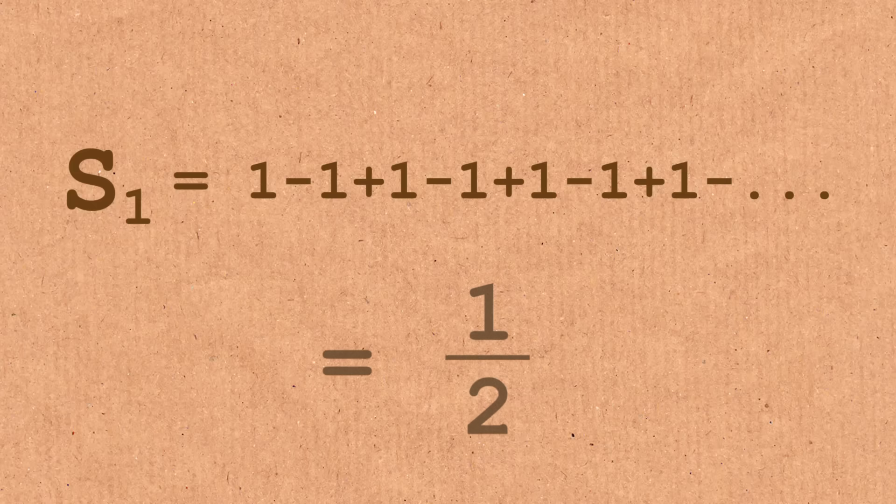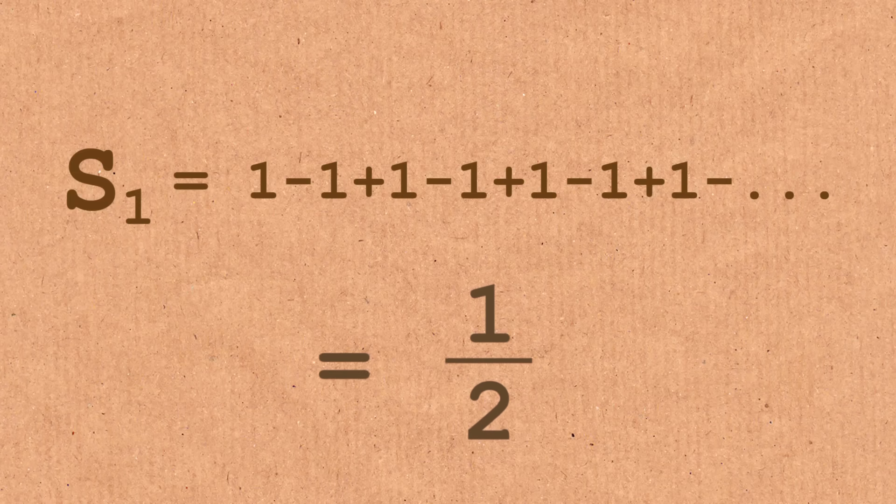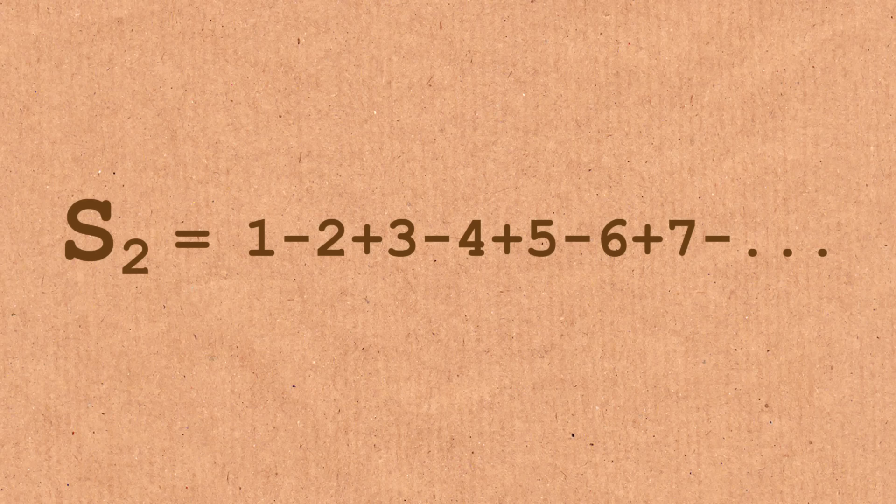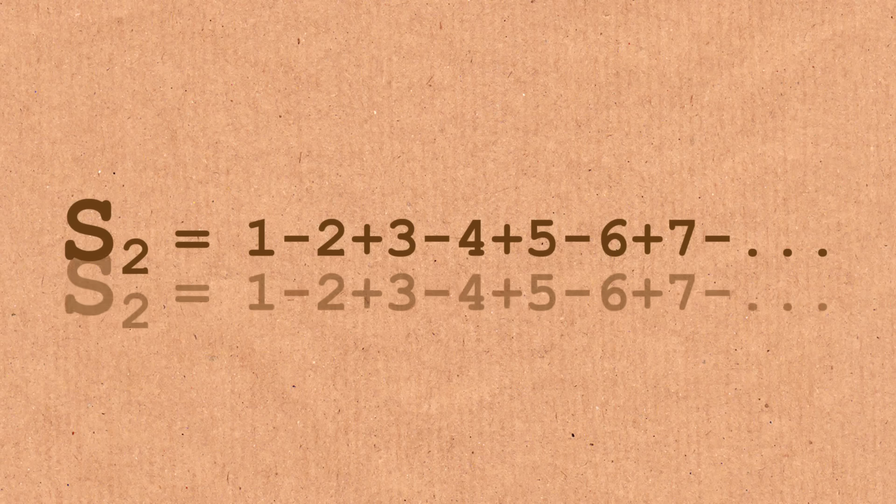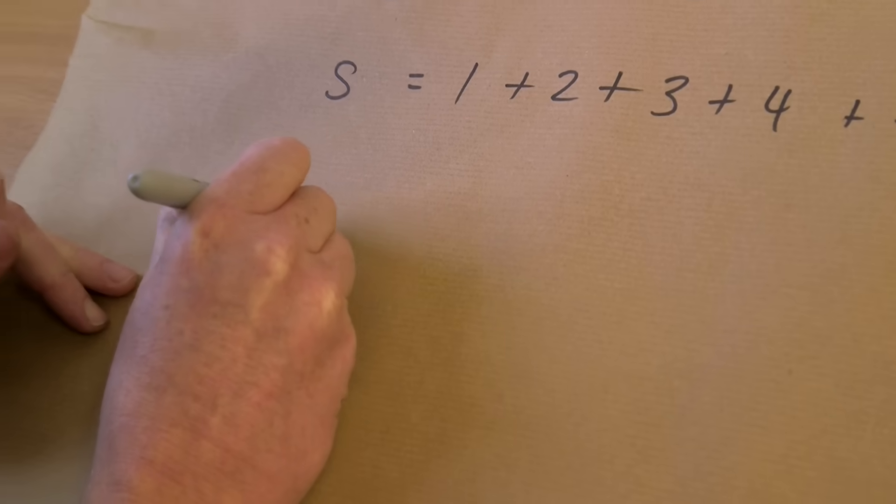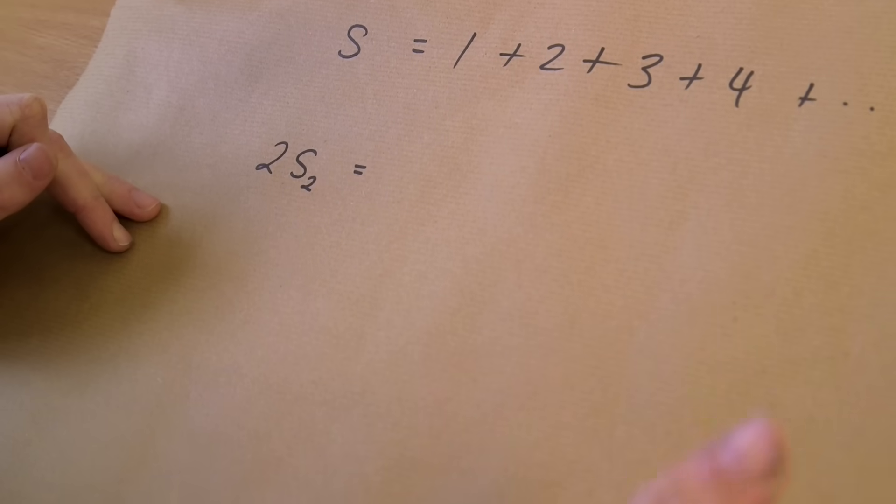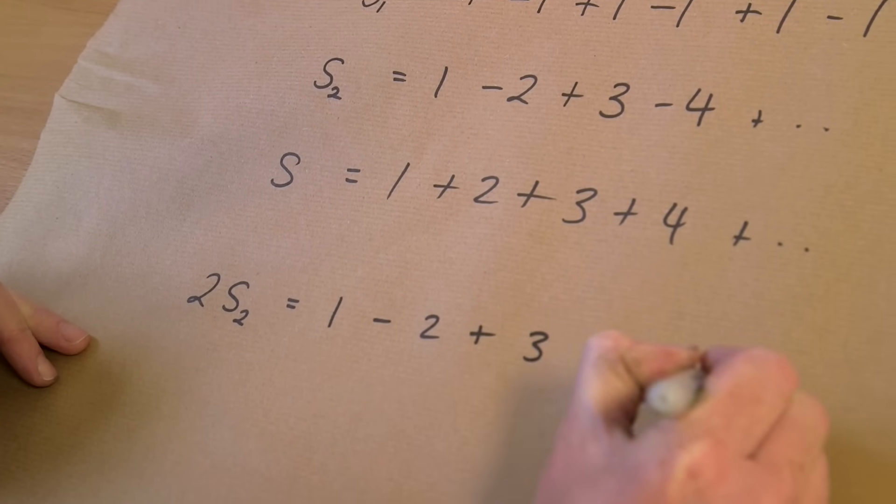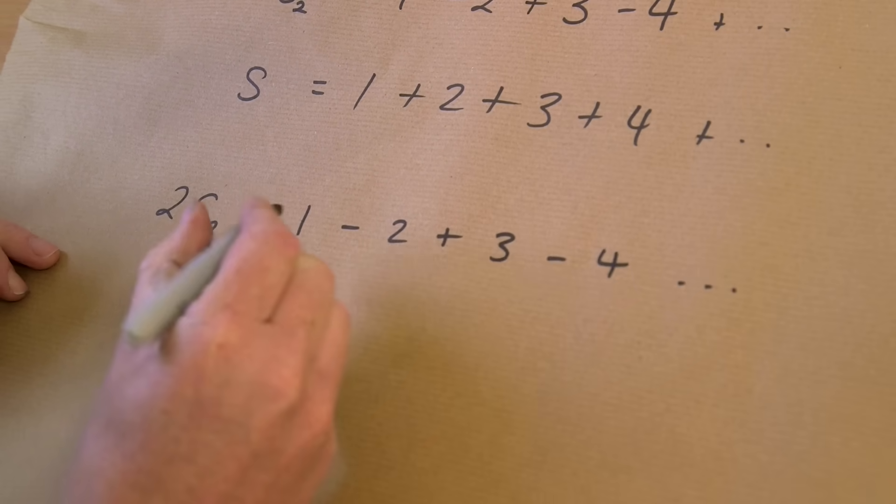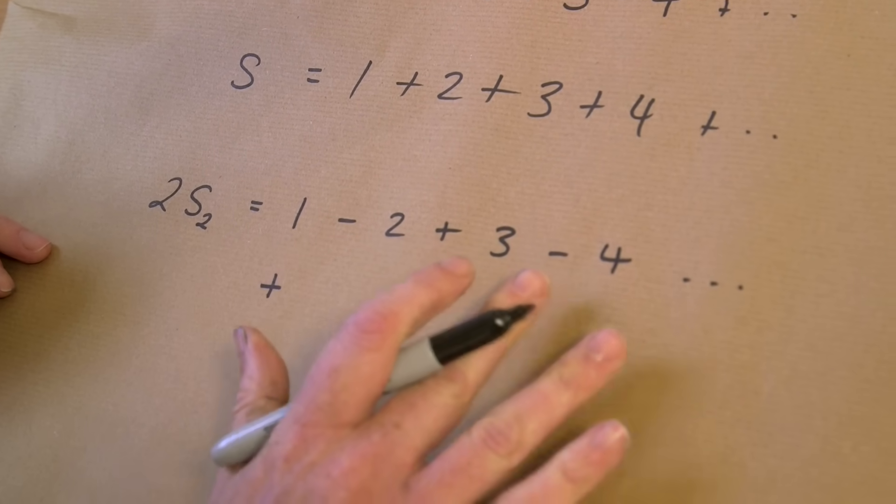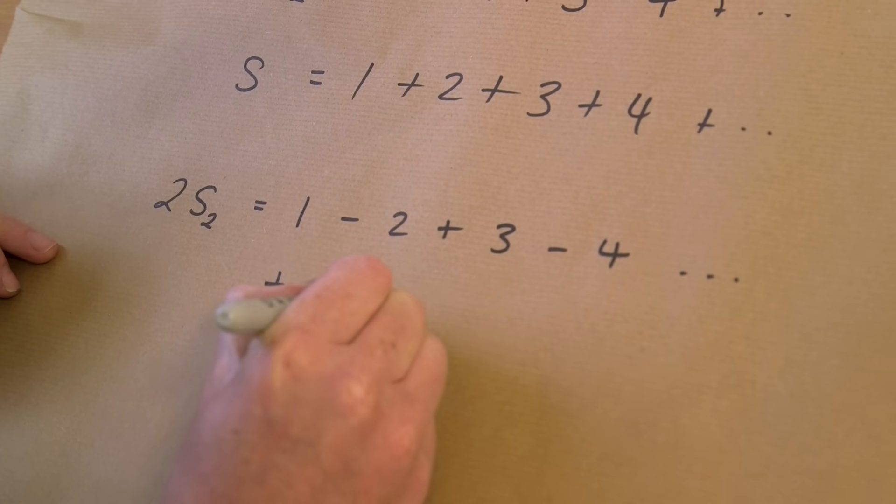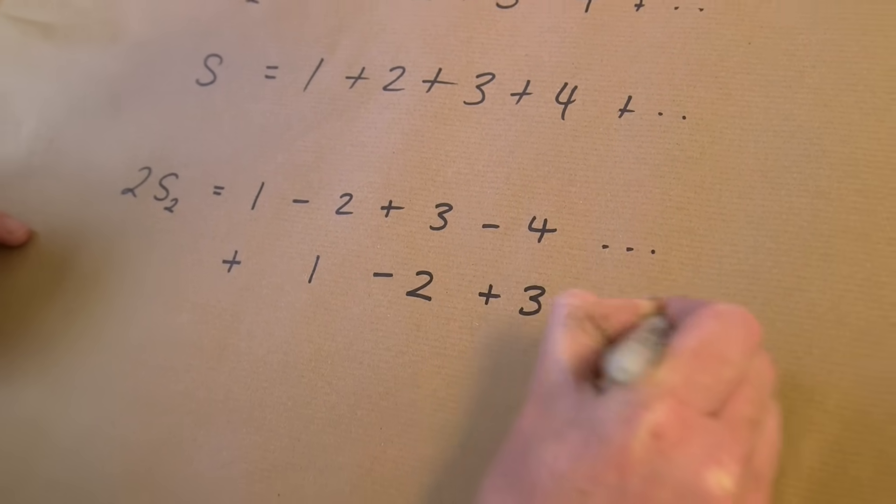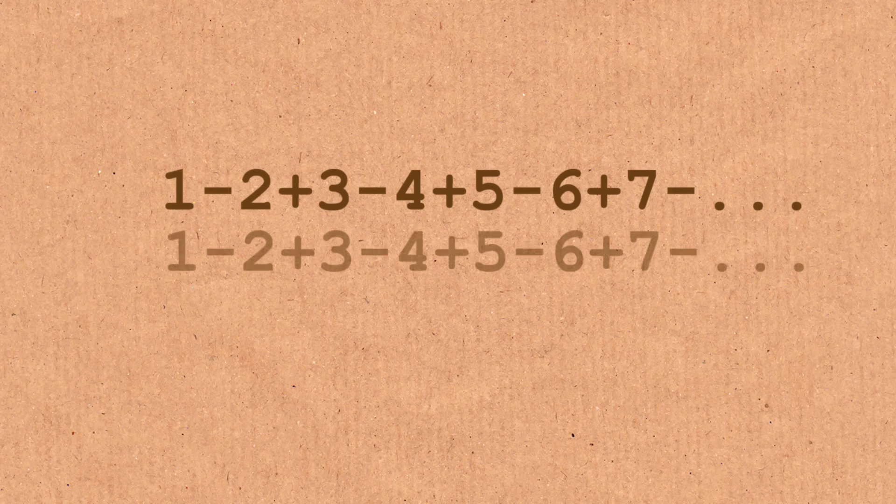But once we know this, we're laughing. Because from this, we can achieve everything that we want to achieve. The next step is to find out what this sum is. So what I'm going to do is, I'm going to take two copies of this S2. So I'm going to add it to itself. So 2 times S2 is equal to, well, let me just write it out. So I'm going to write it out twice. 1 minus 2 plus 3 minus 4 and so on. And then I'm going to add to it itself, but I'm going to shift it along a little bit. So that's plus 1 minus 2 plus 3 minus 4 and so on. I've just taken two copies and added them together.